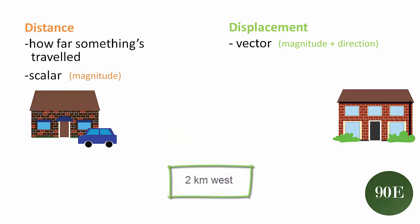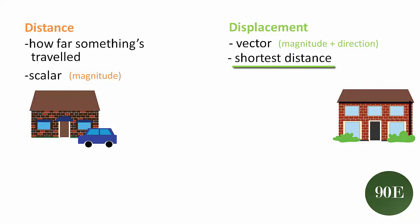But there's another aspect of displacement that we need to consider and that is that displacement takes into account how far something's traveled in relation to where it started. That is, it measures the shortest distance between the origin and the destination. So not only do we have a magnitude and direction but that magnitude is the shortest distance.